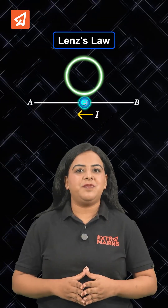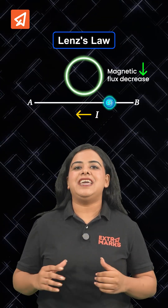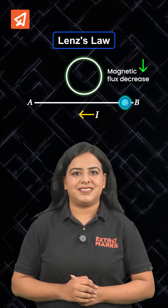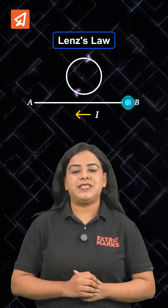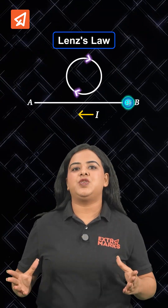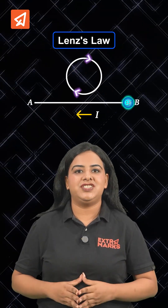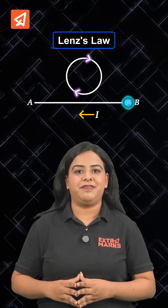And when the electron moves away from the loop, the magnetic flux decreases. So the induced current flows in the clockwise direction so as to oppose the change in magnetic flux.